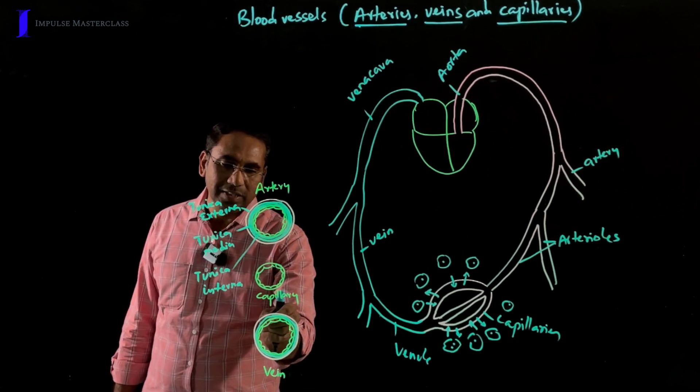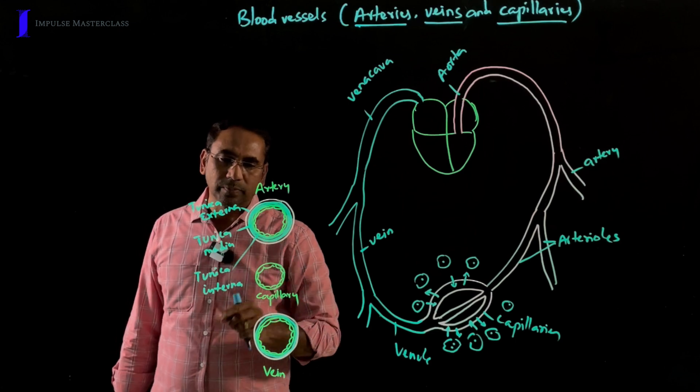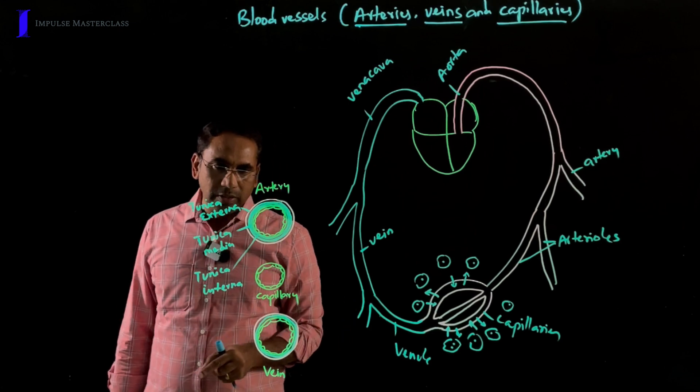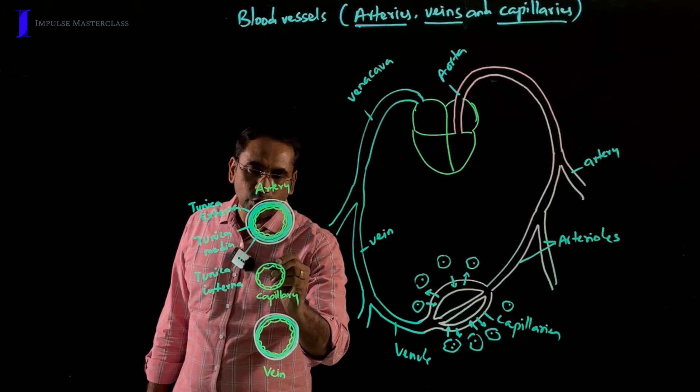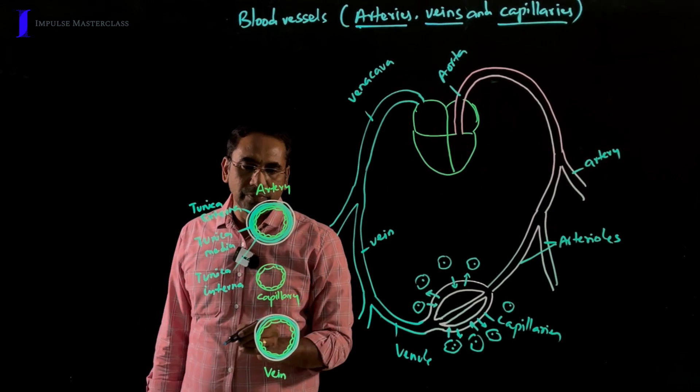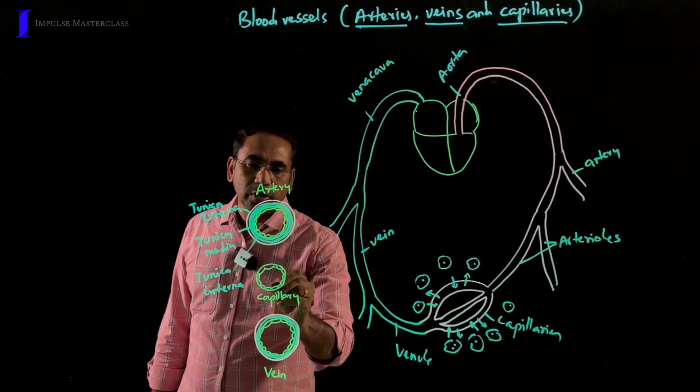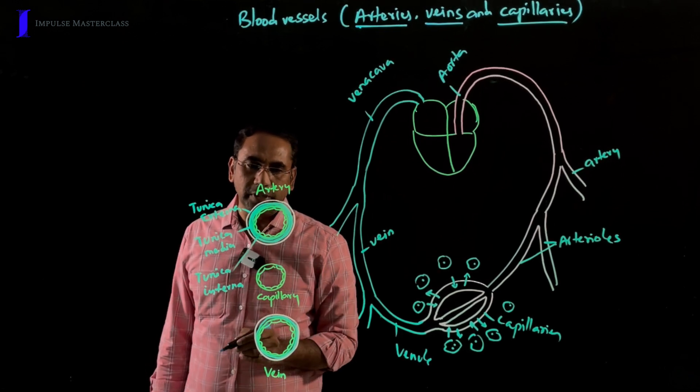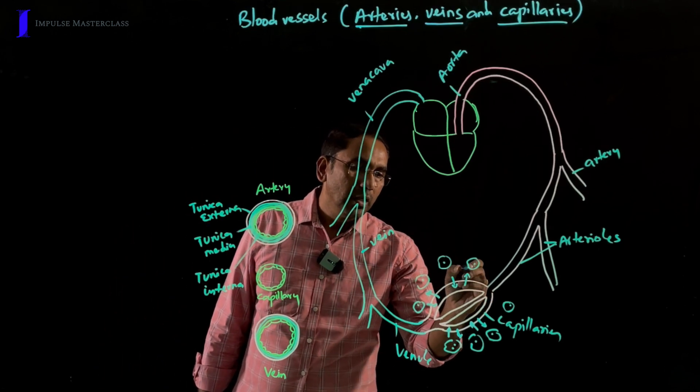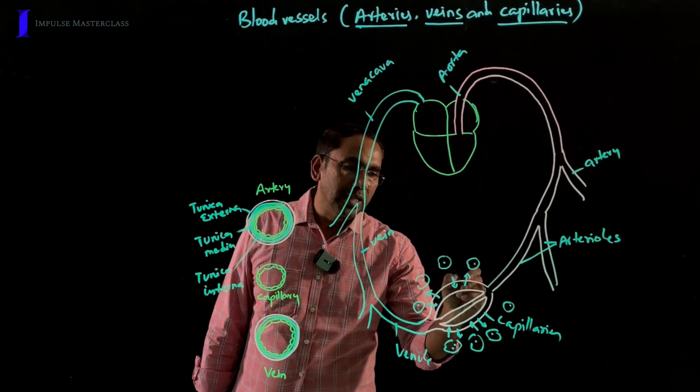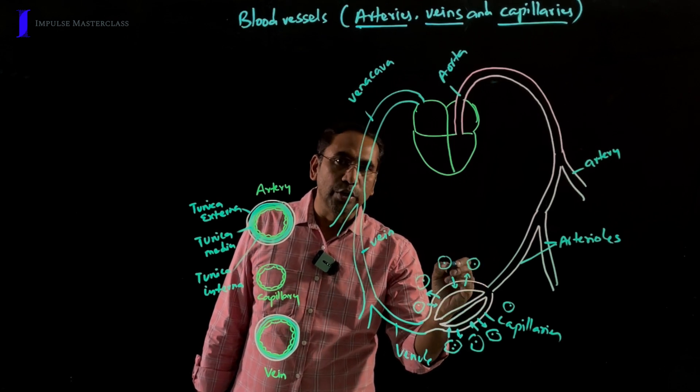Coming to capillaries, here in capillaries, only one layer that is tunica intima is present with a special type of epithelium called squamous epithelium. And this squamous epithelium plays an important role in exchange of nutrients and gases between blood and tissues.